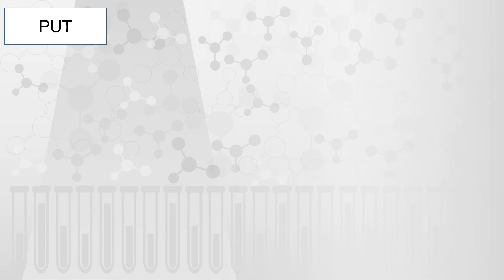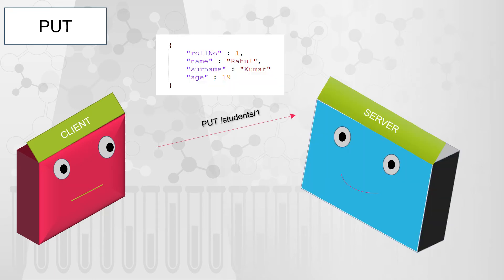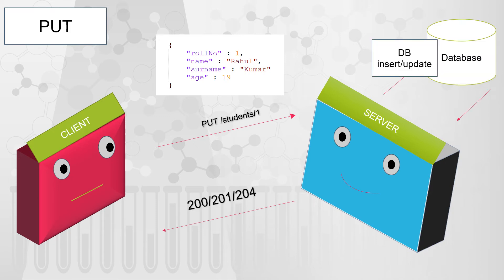The next HTTP method is PUT. PUT is used to completely replace the resource on the server side. The client sends the request to the server with a payload containing the new attributes of the student record. Whatever attributes are sent by the client in this invocation will completely replace what is on the server side, and accordingly the server returns the HTTP response to the client.